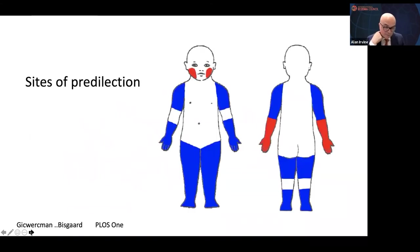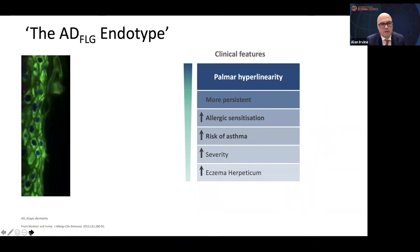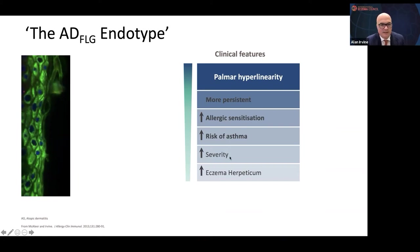From Hans Busaard's group in Copenhagen, filaggrin mutations have sites of predilection on exposed areas — the bits exposed to cold and wind — affecting cheeks and the dorsum of the hand. Further studies show increased palmar hyperlinearity, more persistent disease, more allergic sensitisation, more risk of asthma, more severe disease, and more herpetic infections if you have a filaggrin mutation in the context of AD.